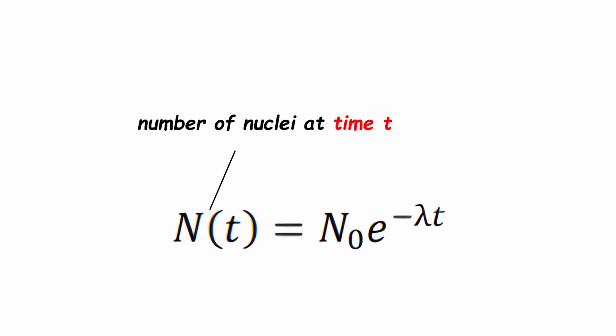Where n of t is the number of nuclei at time t, n naught the initial number and lambda the decay constant.